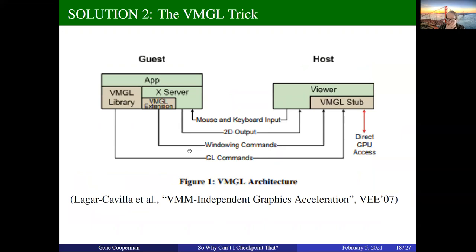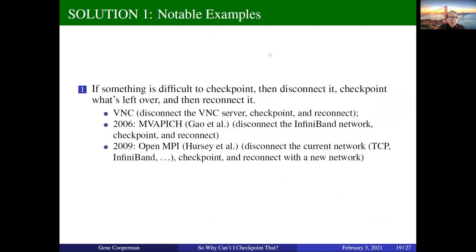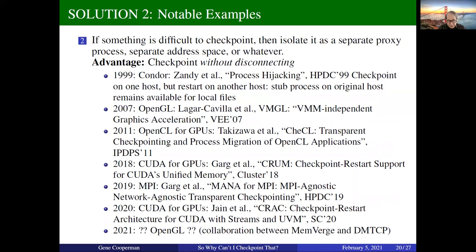VMGL had something similar - an early version of supporting OpenGL, not specifically for checkpointing, but within easy reach. The idea was to have OpenGL running within a virtual machine while still reaching out to the graphics driver outside. They could play various tricks related to checkpointing. For solution one, the notable examples are: VNC, MVAPICH and OpenMPI - both would disconnect from InfiniBand, checkpoint, then reconnect. Now let's move on to solution two: if something is difficult to checkpoint, we're going to isolate it as a separate proxy process - or maybe a separate address space. This idea also has history going back to 1999 with early attempts at process hijacking.